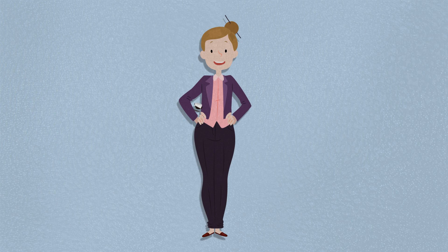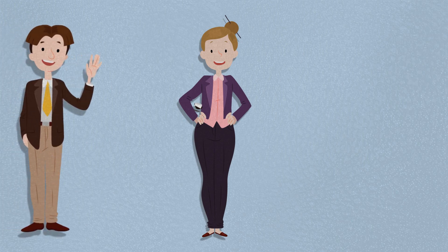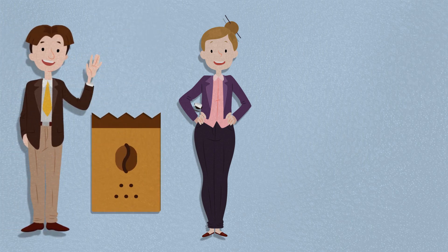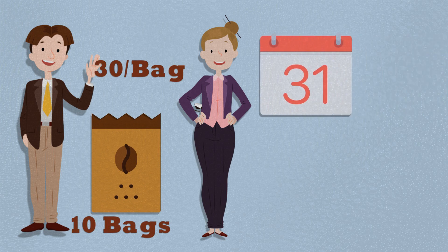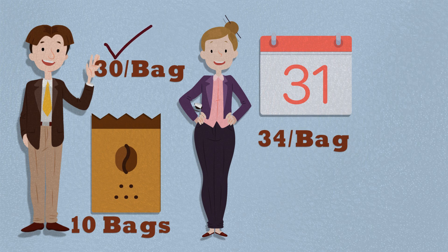Rosie, a coffee bean merchant, comes to help him. She contracts with John to sell 10 bags of beans at rupees 30 per bag after one month. Imagine that after one month the actual market price of the bean went up to rupees 34 — so because of Rosie's contract, John can buy them at rupees 30 and save rupees 4 per bag.